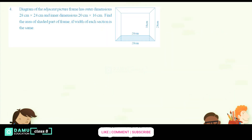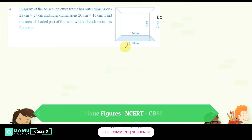Hello viewers, in this module we are going to discuss the fourth question. The frame has outer dimensions 28 cm by 24 cm, so length is 28 cm and breadth is 24 cm. The inner dimensions are 20 cm by 16 cm, so inner length L2 is 20 cm and inner breadth B2 is 16 cm.